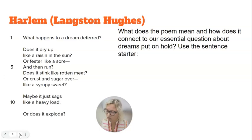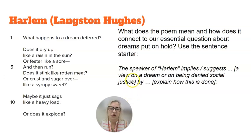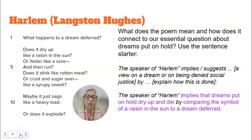The next question is looking at what the poem means and how it connects to our essential question about dreams put on hold. Use the sentence starter: "The speaker of Harlem implies or suggests..." and then create a view on a dream or on being denied social justice, explaining how this is done. Here's a sample: "The speaker of Harlem implies that dreams put on hold dry up and die by comparing the symbol of a raisin in the sun to a dream deferred."